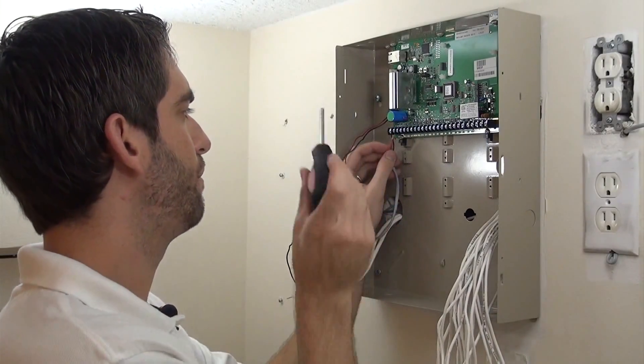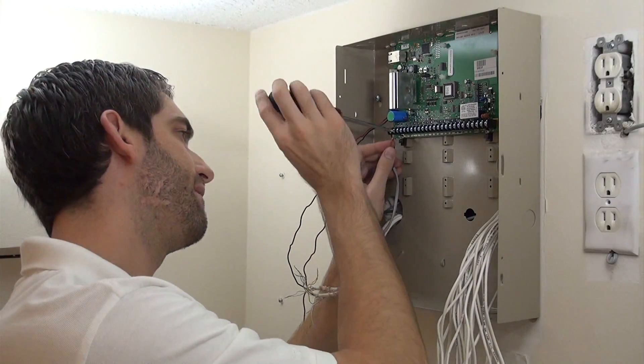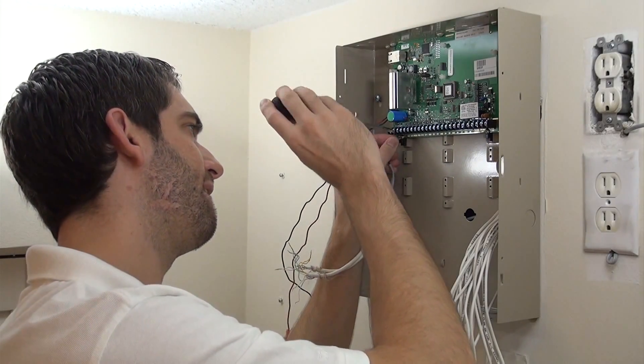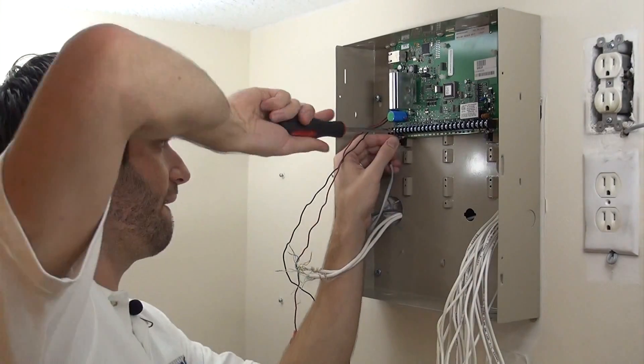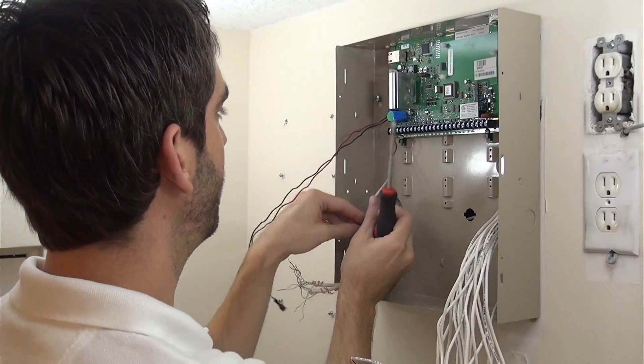We've got our black negative connected, and now our positive. So now we have our AC power wire good to go.